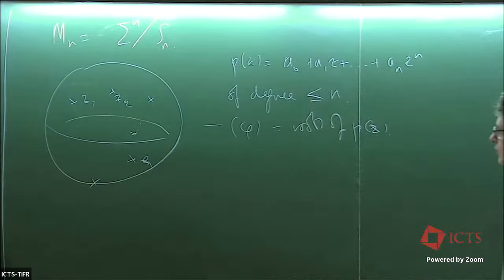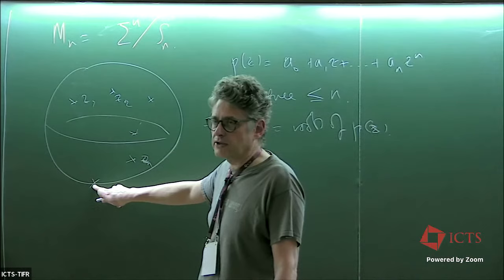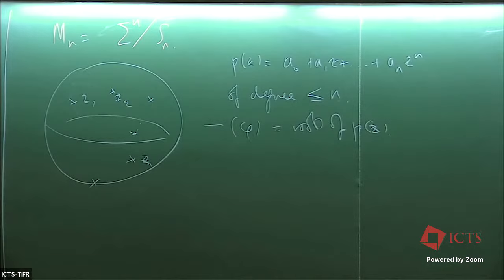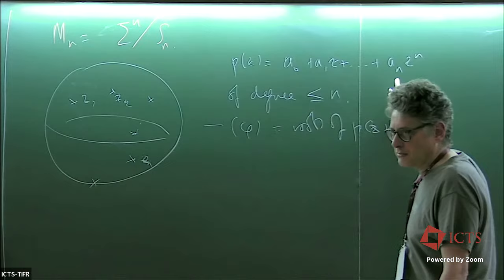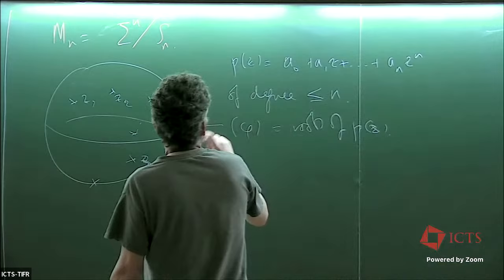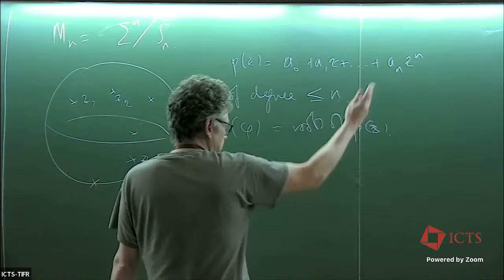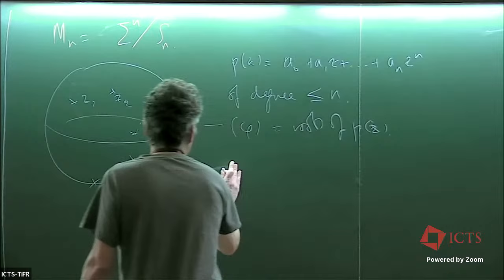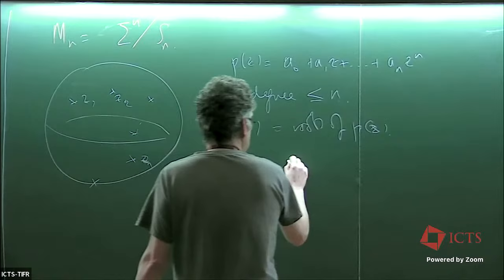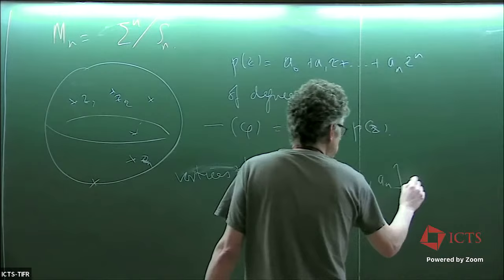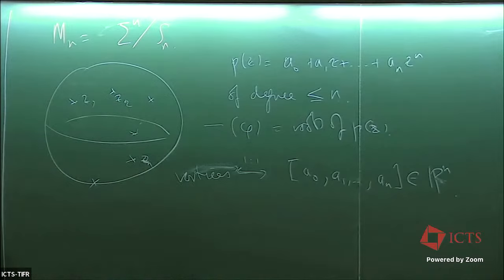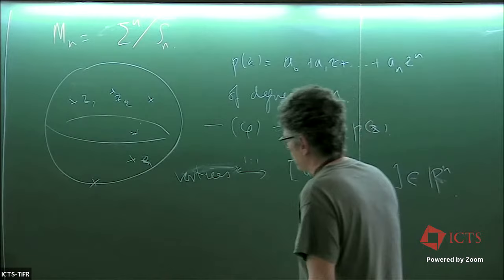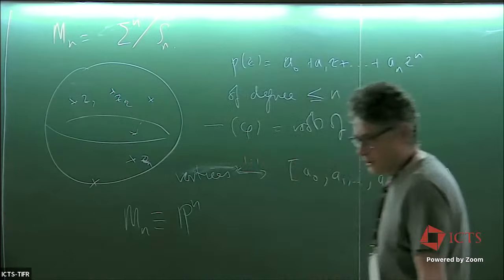The polynomial itself isn't what you want, since multiplying all coefficients by the same nonzero complex number doesn't move any roots. So we quotient by that equivalence — the obvious action of ℂ*. Thus vortices are in one-to-one correspondence with projective equivalence classes of coefficients of polynomials — the polynomials at whose zeros the Higgs field vanishes. From that, the moduli space is diffeomorphic to complex projective space ℂP^N.